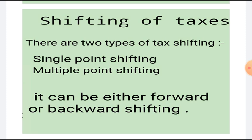So talking about forward shifting — for example, if a sugar producer is imposed taxes by the government, what will the producer do? It will increase the prices to the wholesaler, and the wholesaler will increase the prices further, and finally pass it on to the consumer. So this is the shifting we call forward shifting.